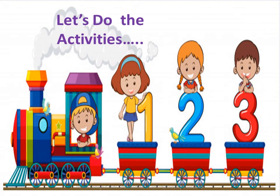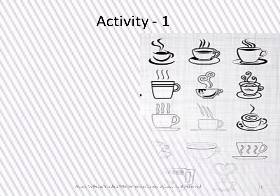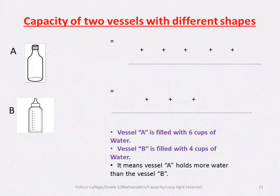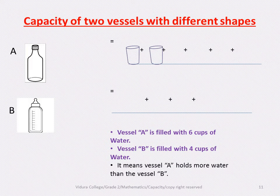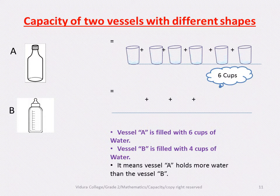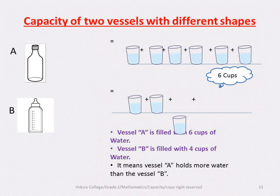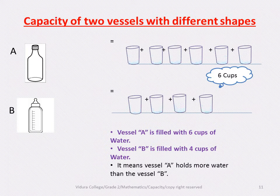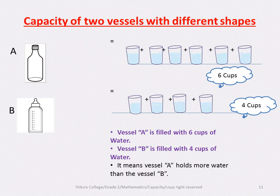Let's do the activities. Activity one: comparing the capacity of two vessels with different shapes. Vessel A is filled with six cups of water. Vessel B is filled with four cups of water. It means vessel A holds more water than vessel B.